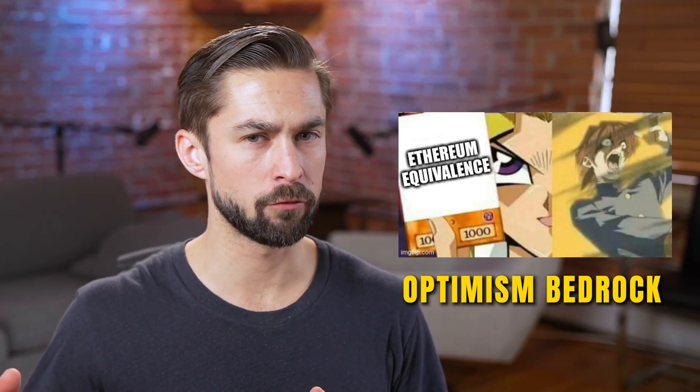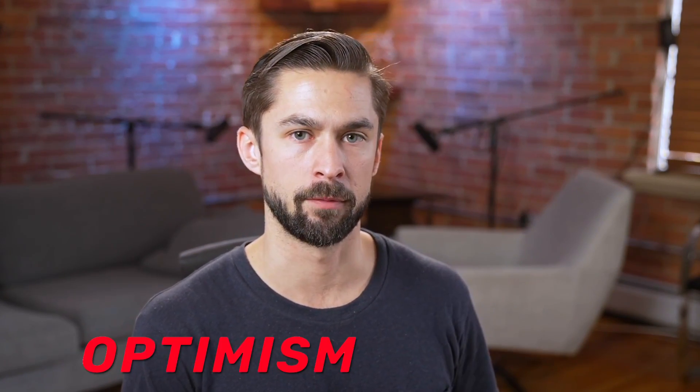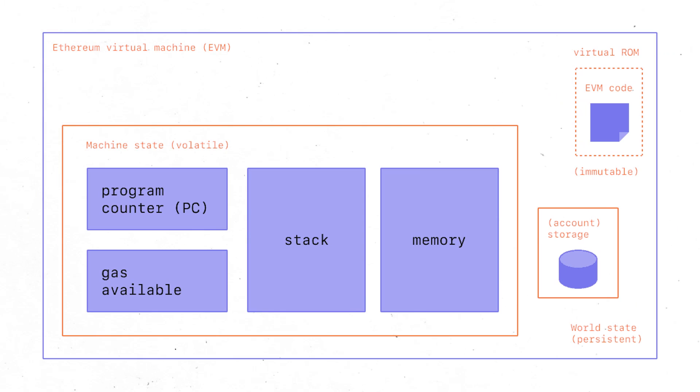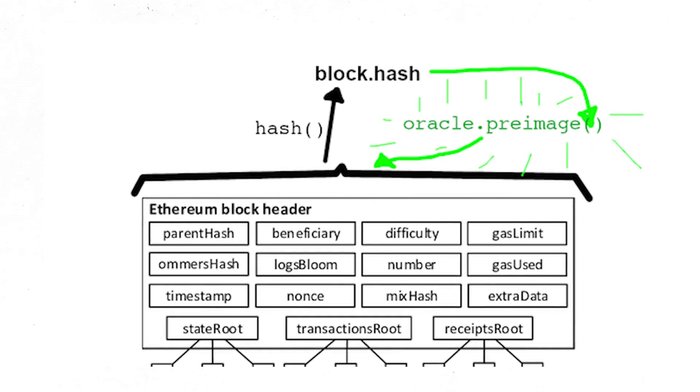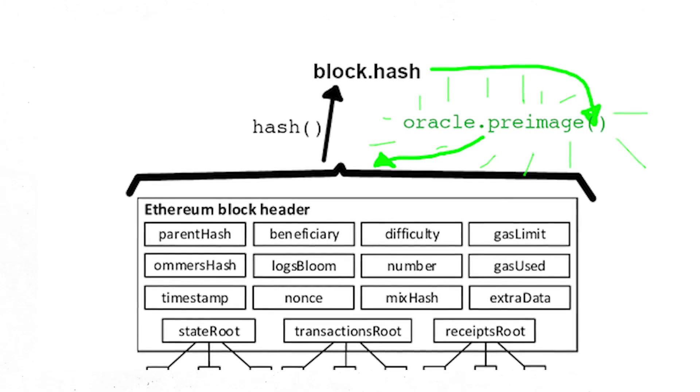You might be asking how Optimism's Bedrock fits into the OP stack. Optimism's Bedrock is the first implementation of the OP stack - the first collection of modules that Optimism is using to produce Optimism Bedrock. They're using the Ethereum virtual machine as their execution layer to make them EVM equivalent, their own Canon fraud proofs to prove transactions to the settlement layer, and they're a rollup so all their data goes on chain.